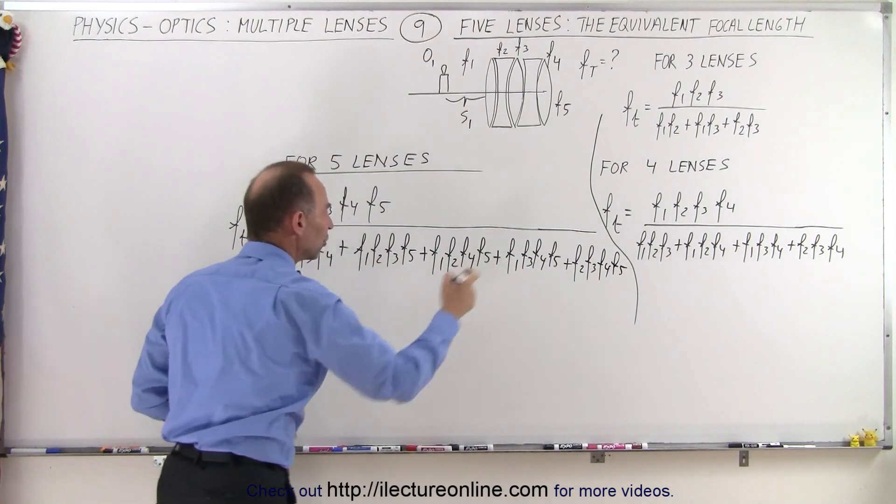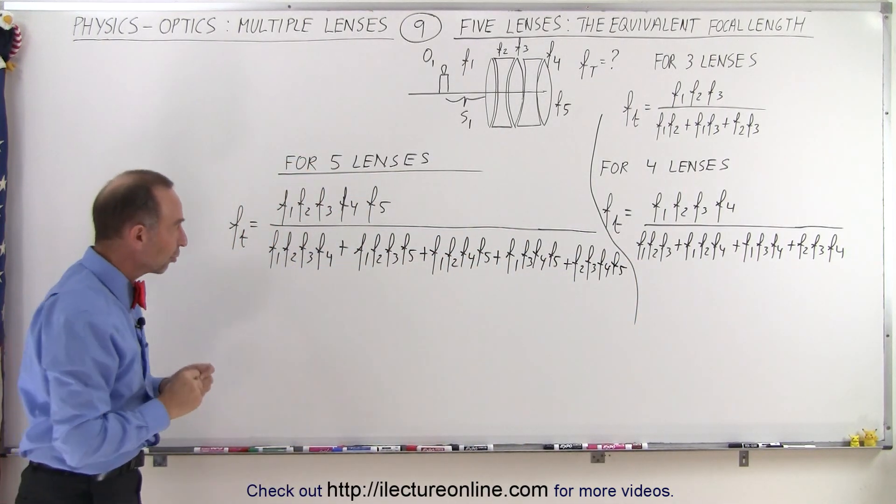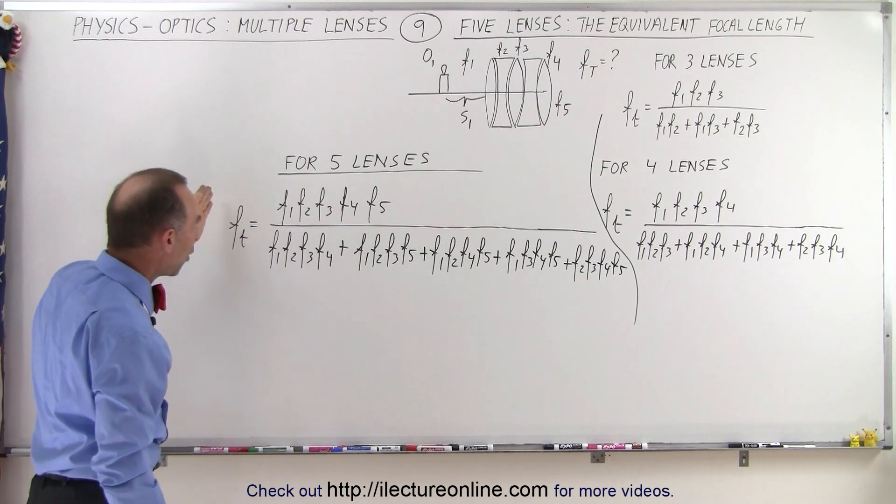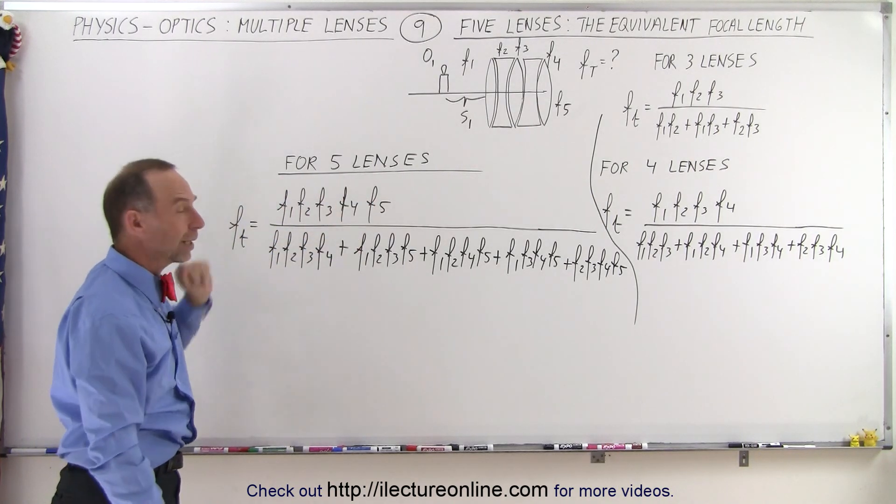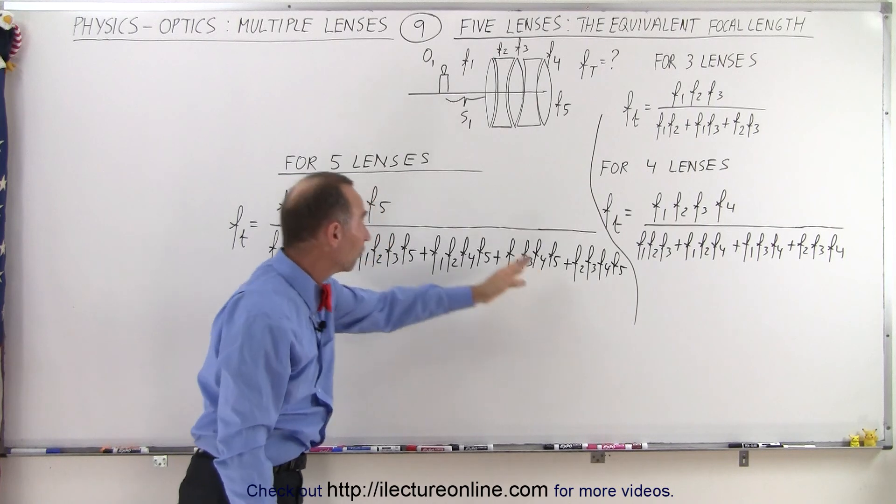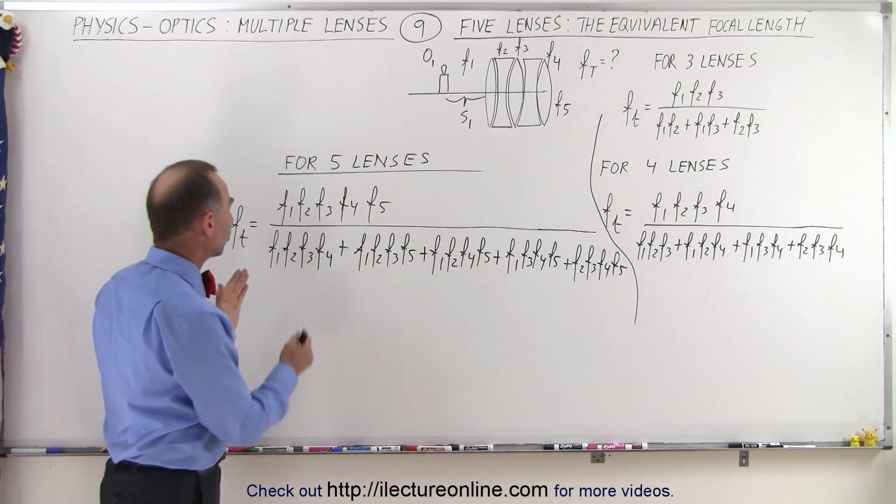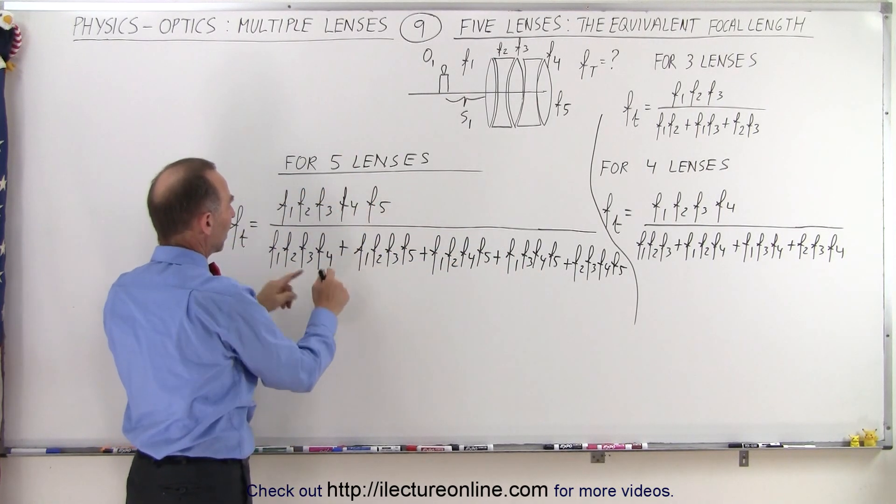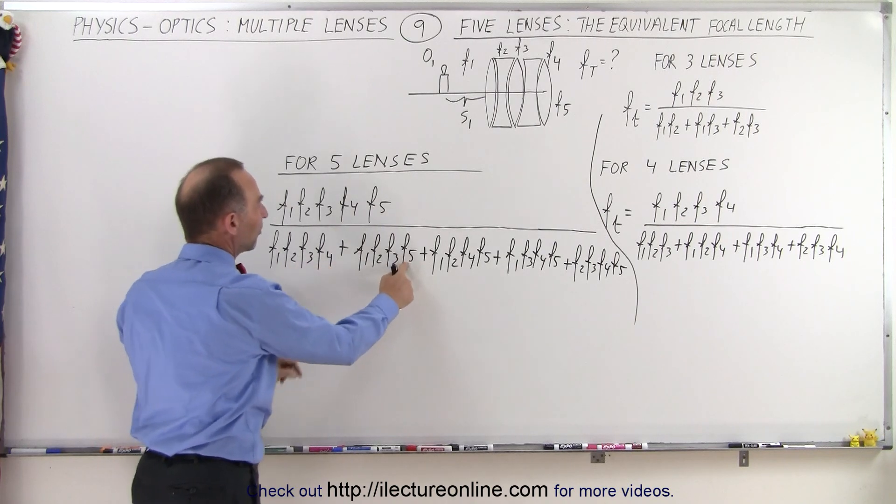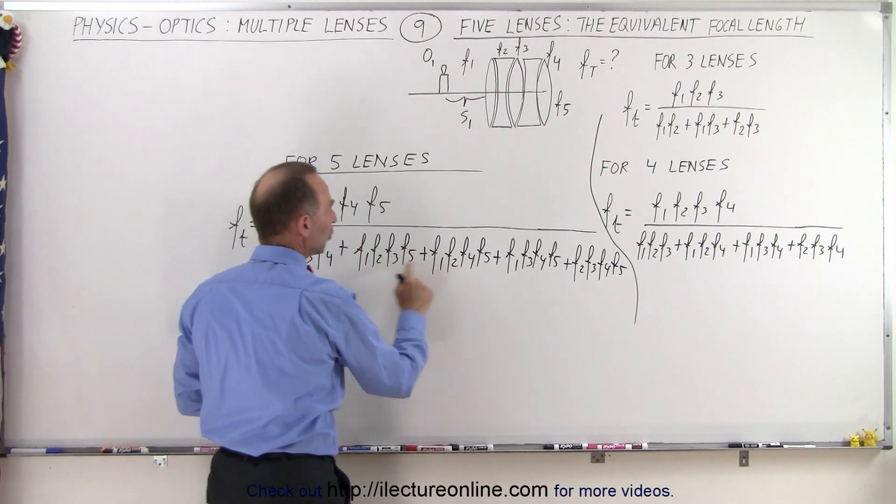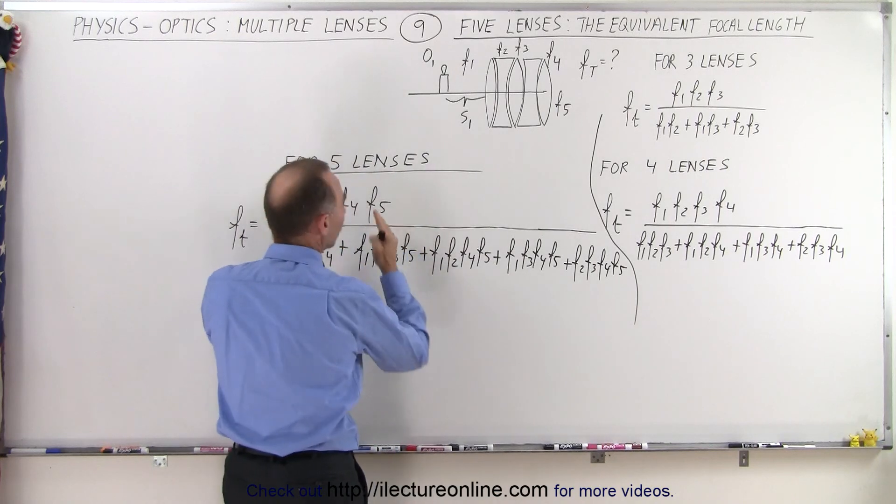So here we have the five terms in the denominator and the one term in the numerator. In the numerator, we have all five focal lengths multiplied together. In the denominator, we have five terms for five lenses. And we start with the first four, then replace the four by a five, the three by a four, the two by a three. And then we repeat by taking the last four.